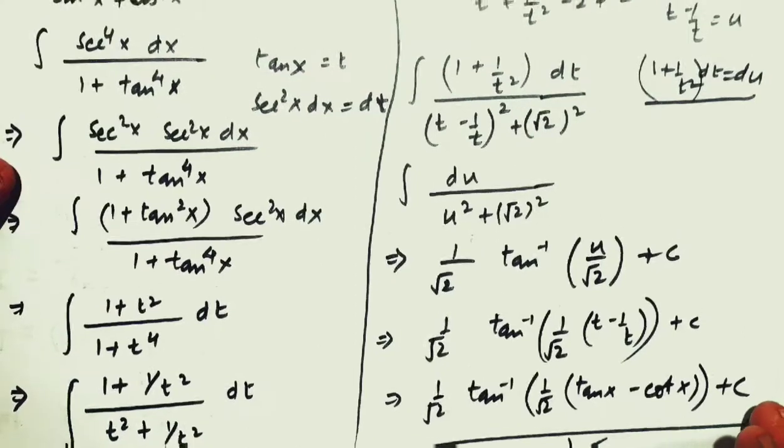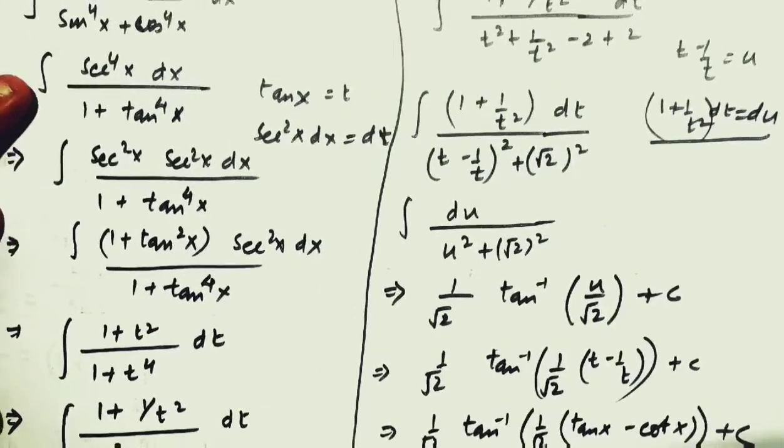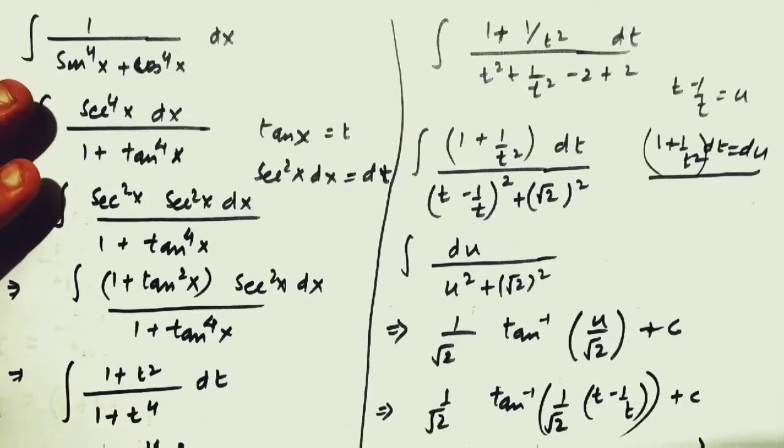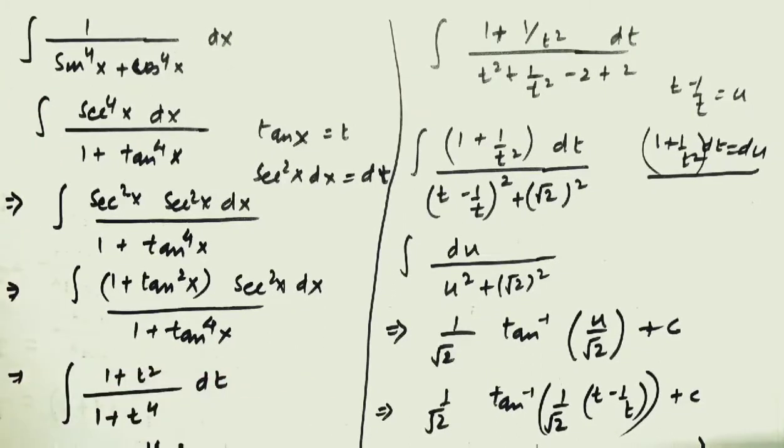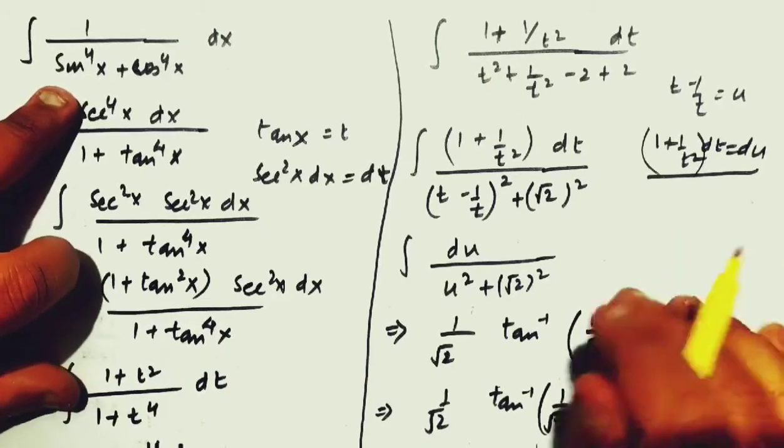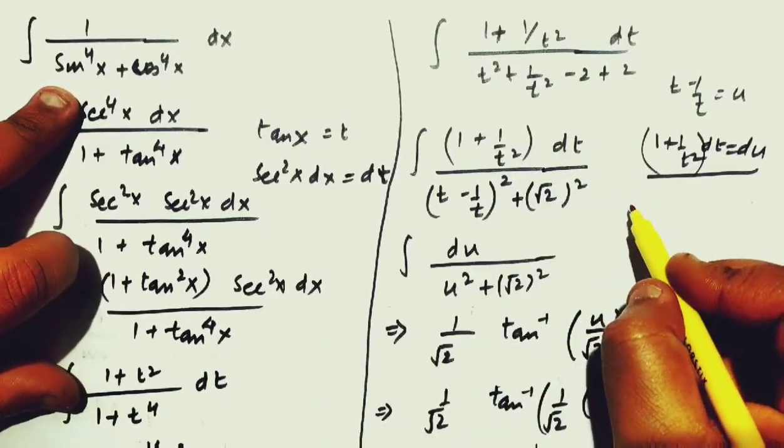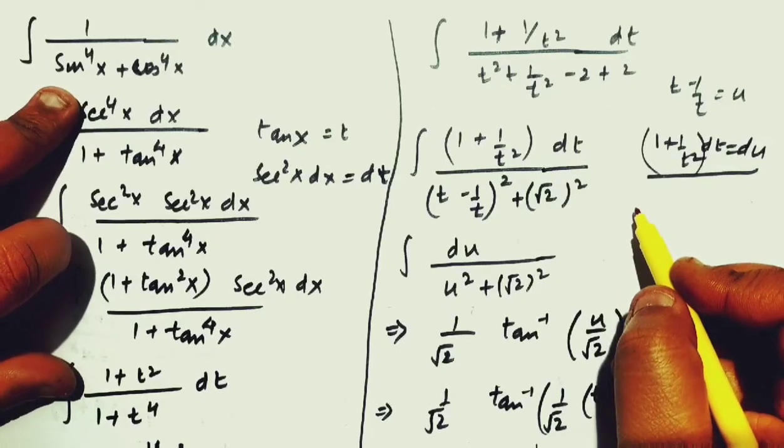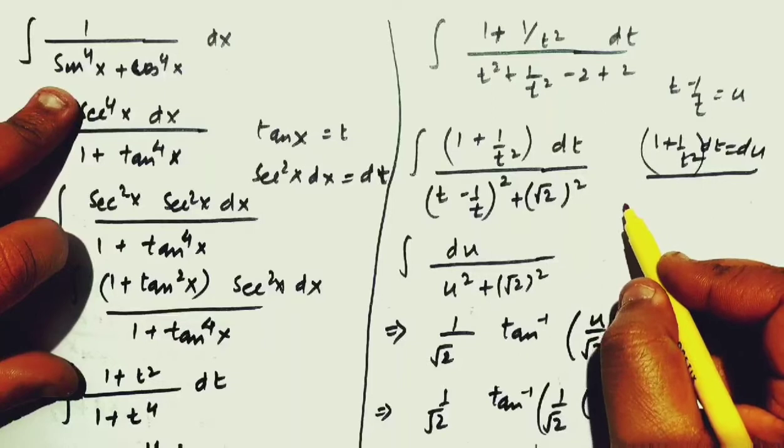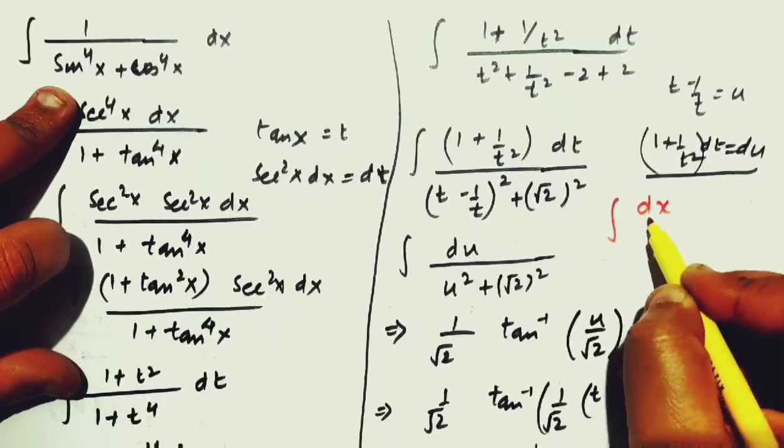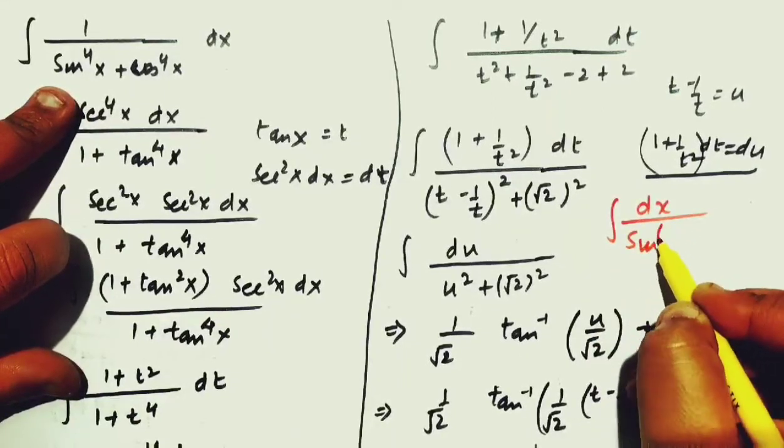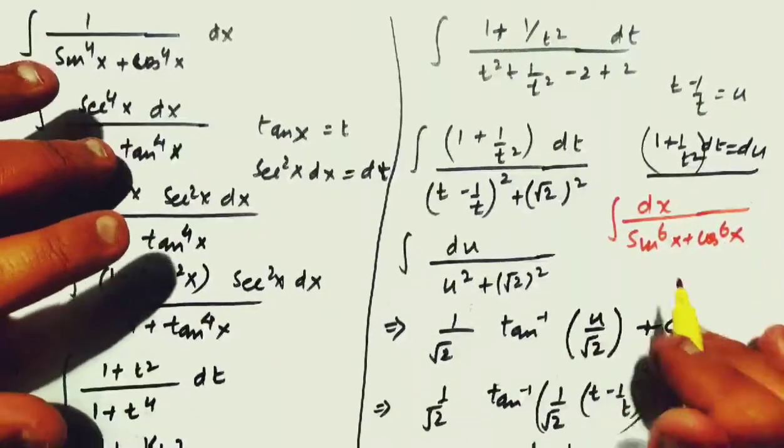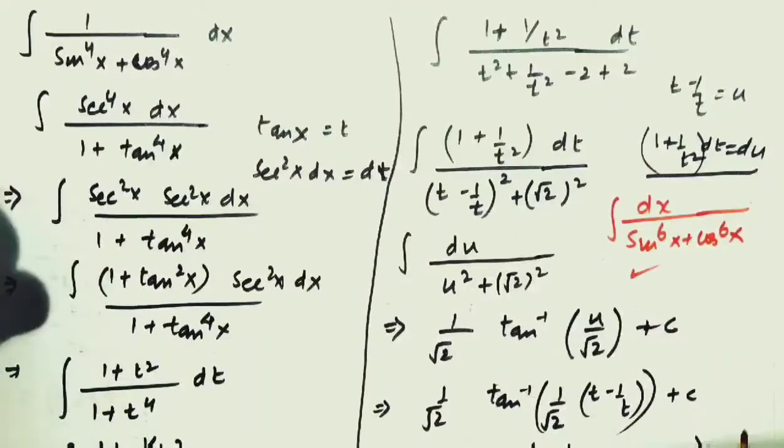So, it will be very easy. That is, dx upon sin to the power 6x plus cos to the power 6x. This problem discussed here earlier. You can also try by using this method. Otherwise, its video is available in the playlist and the link is given in the description box. So, you can watch that. But, you can try first that sin to the power 6x plus cos to the power 6x on yourself. If you have a problem, then you can watch the video. All right.